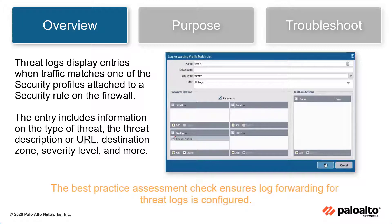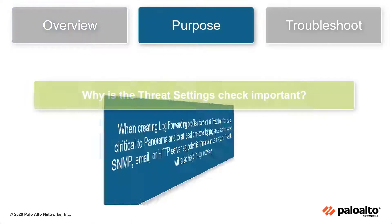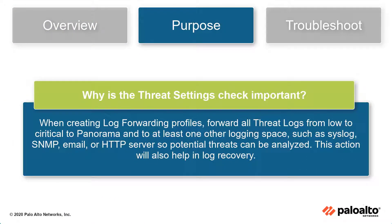The threat settings best practice check ensures that log forwarding for threat logs is configured. When you create log forwarding profiles, forward all the threat logs from low to critical to Panorama and into at least one other logging space, such as syslog, SNMP, email, or HTTP server, so that you can analyze potential threats. This also helps in log recovery.